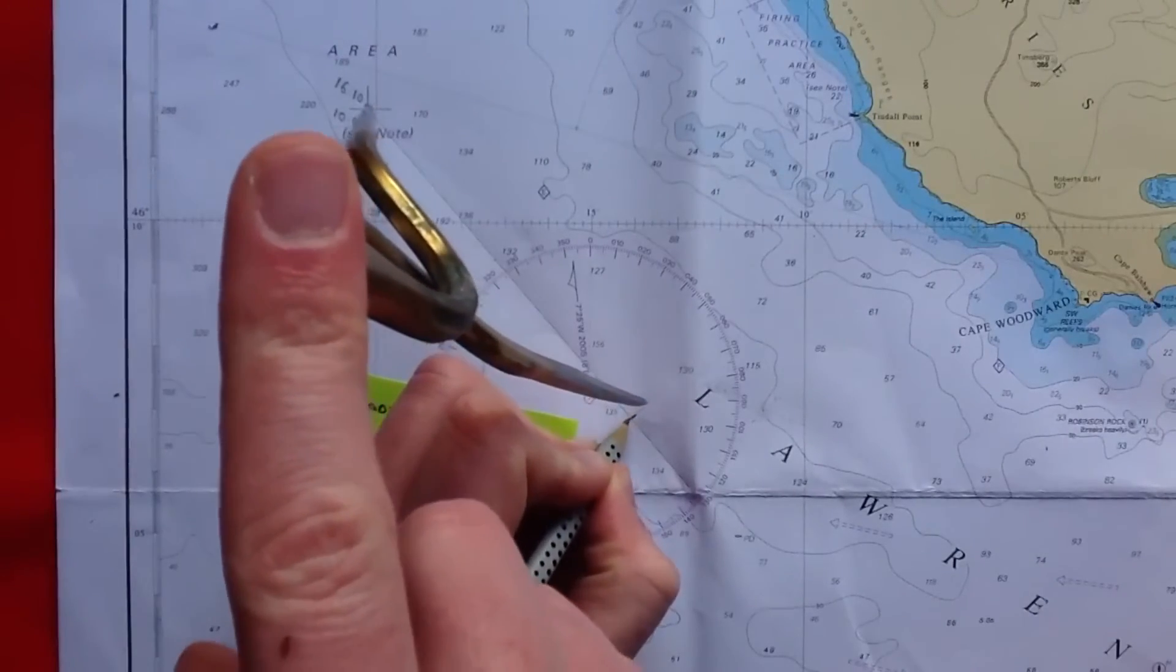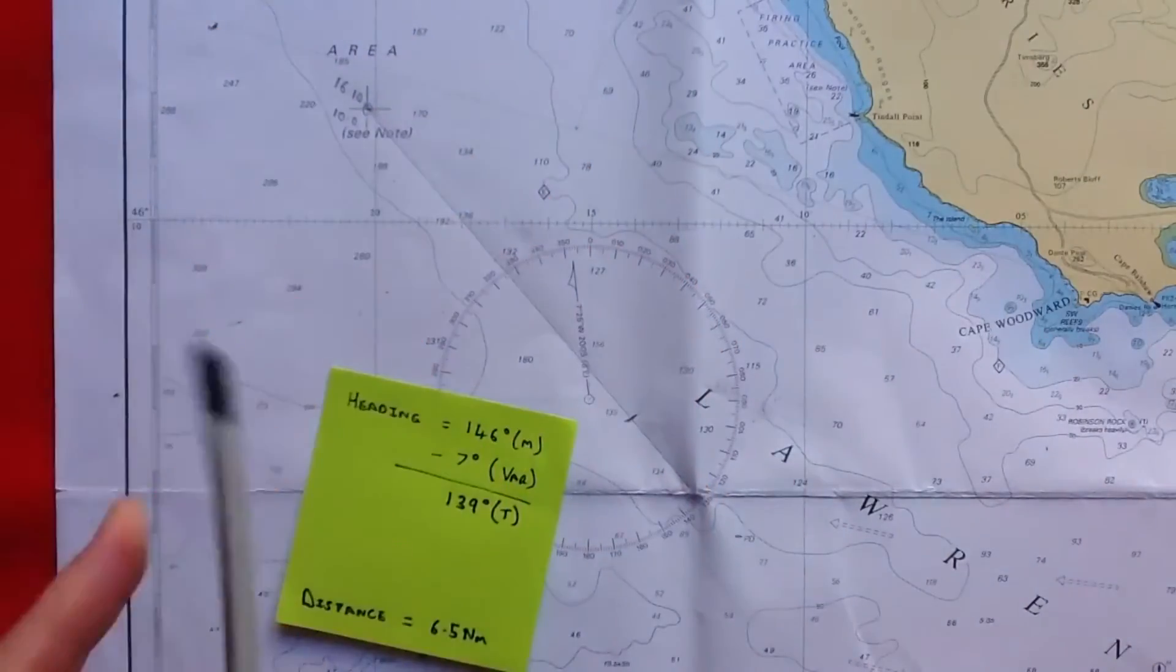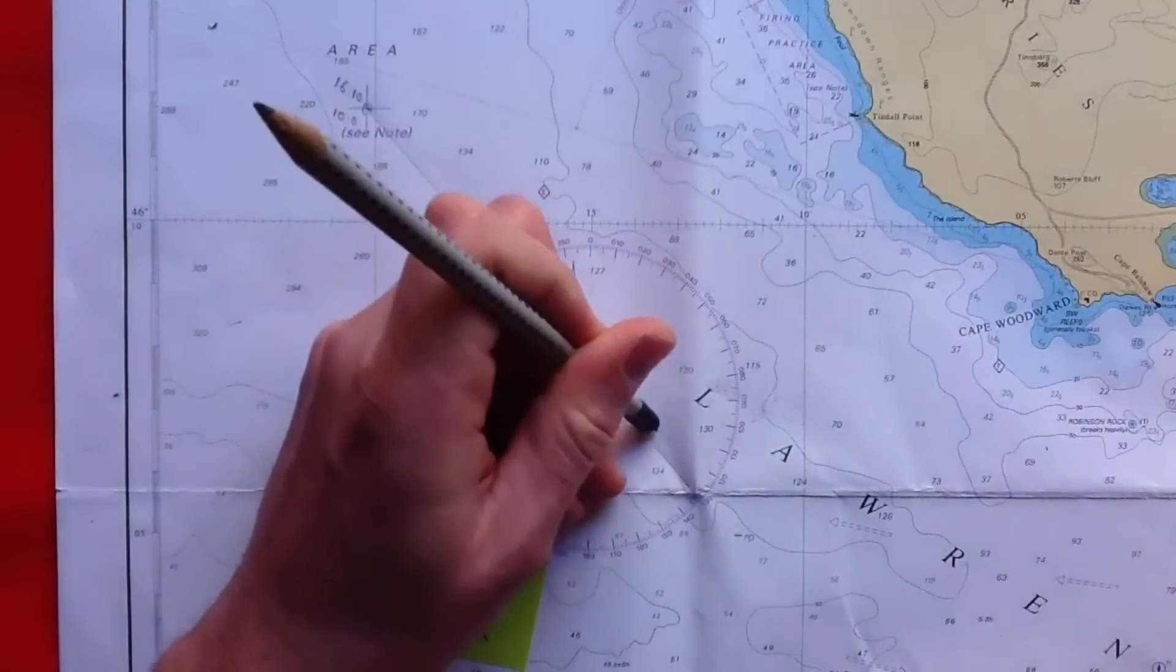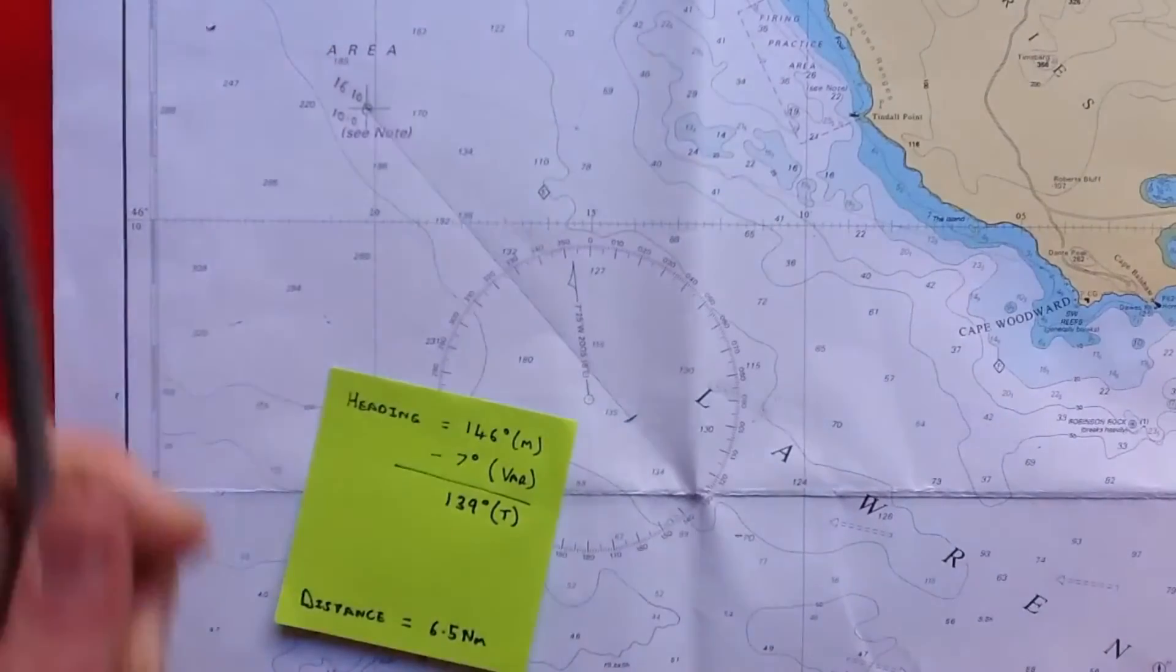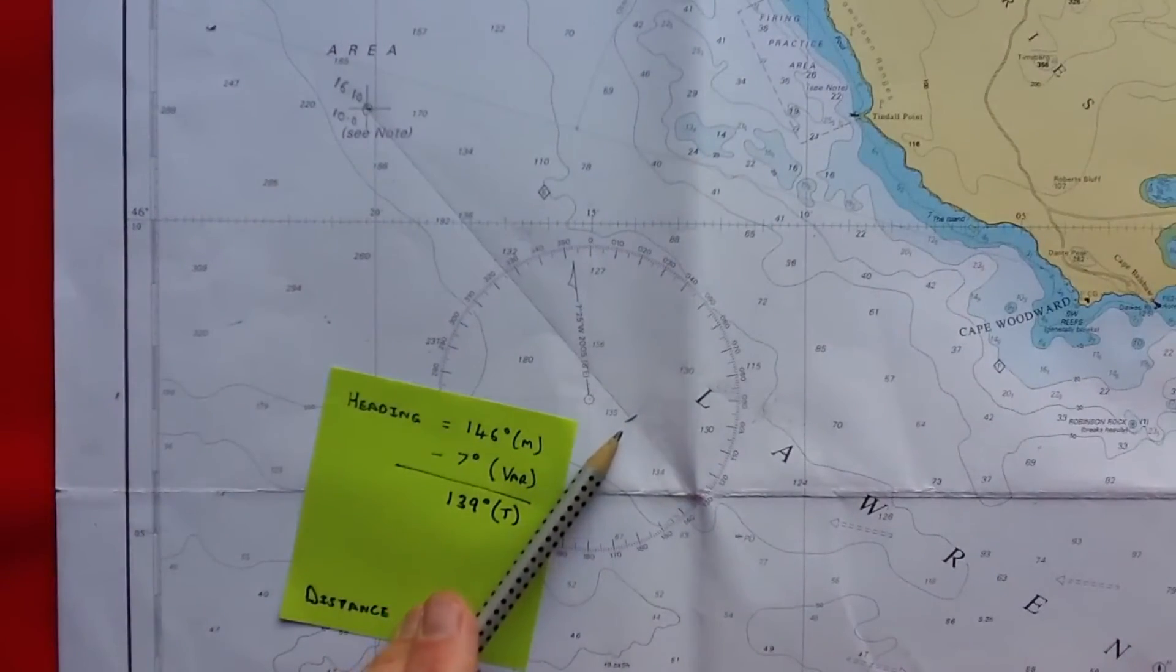And we just simply mark that with a line, rubbing out any excess. And that's our dead reckoning or DR position.